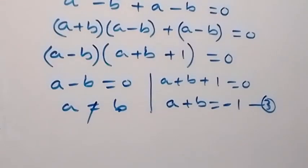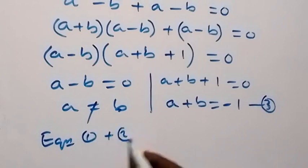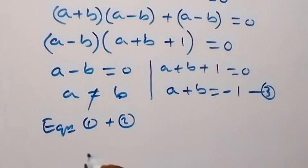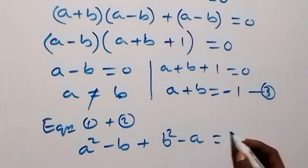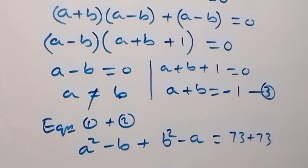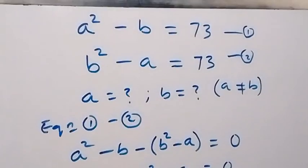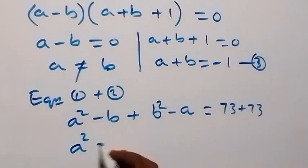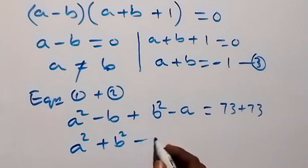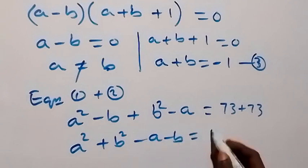Next, let's add equation 1 and equation 2. On the left hand side of equation 1 we have a squared minus b, and on the left hand side of equation 2 we have b squared minus a. On the right hand side we have 73 plus 73. Bringing the squares together, we have a squared plus b squared, then minus a minus b equals 146.